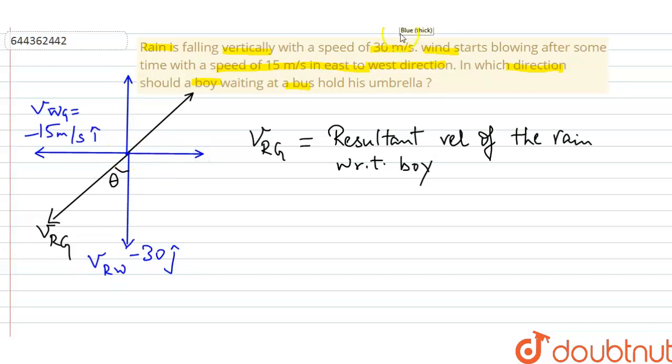This will be the theta here. So if I find theta, it will be equal to this and the umbrella that the boy must hold should be in this direction, just opposite to the resultant.